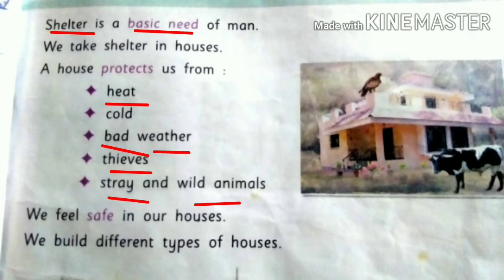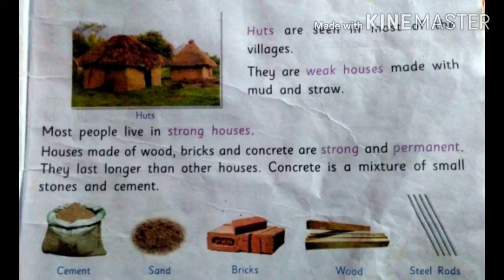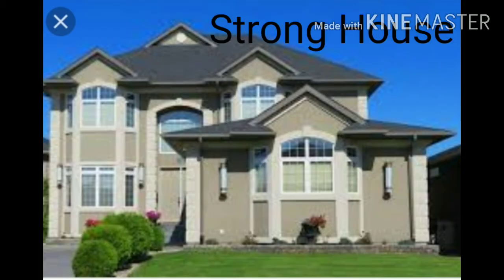Now let us see different types of houses. The first one is huts. You might have seen them in most of the villages. They are weak houses made with mud and straw. झोपड़ियां कमजोर होती हैं क्योंकि इन्हें मिट्टी से बनाया जाता है।